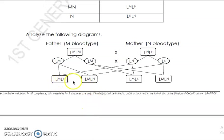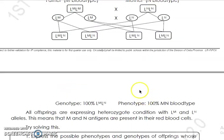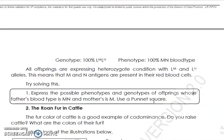That means all four offspring have the genotype LM LN, so 100% of offspring have genotype LM LN. What is the phenotype, or blood type? The blood type is 100% MN.